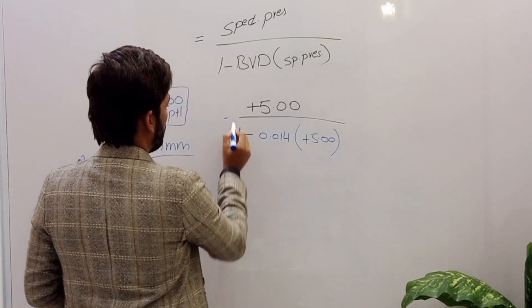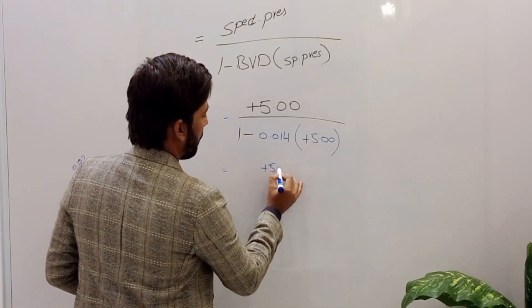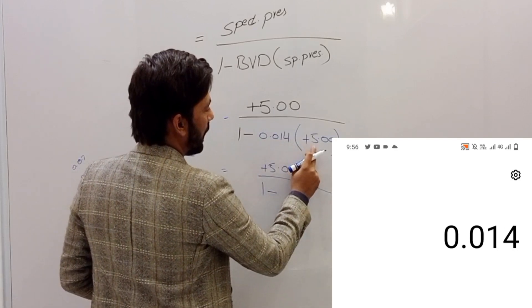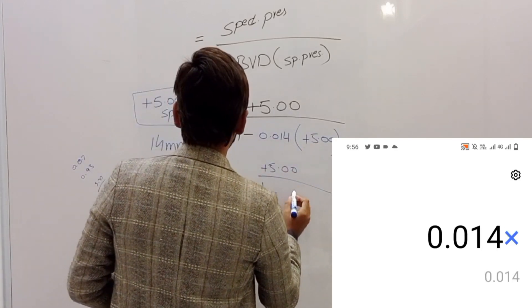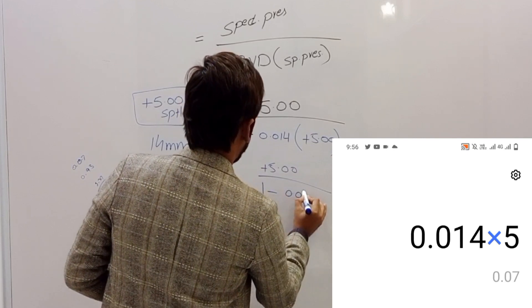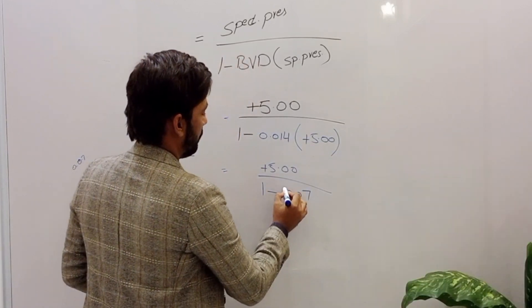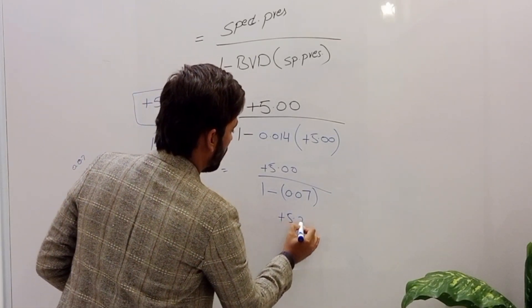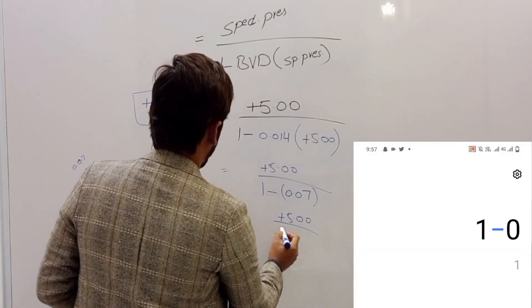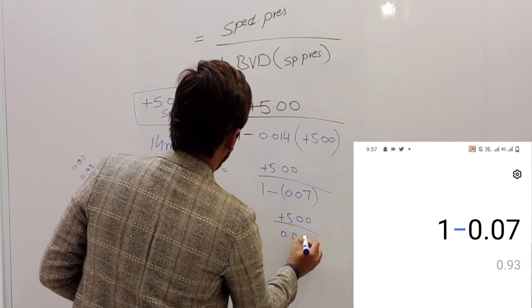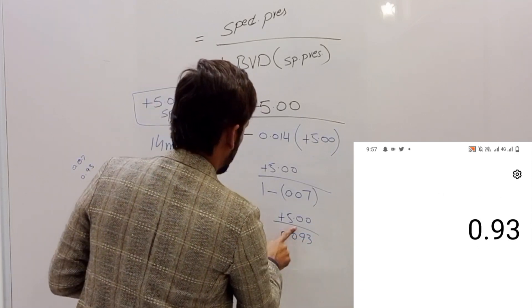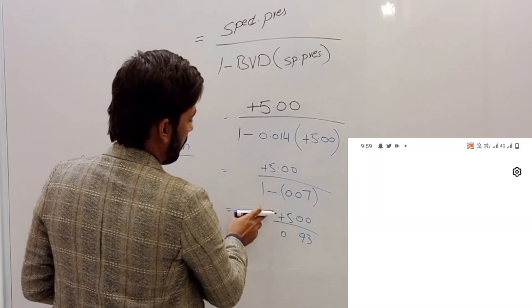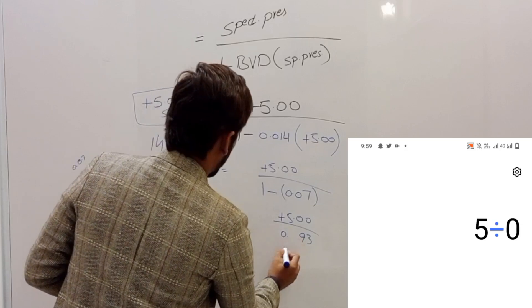Let's solve. We multiply 0.014 by plus five, which gives 0.07. Then one minus 0.07 equals 0.93.